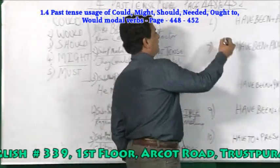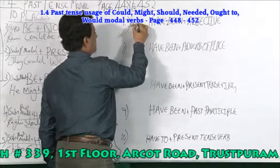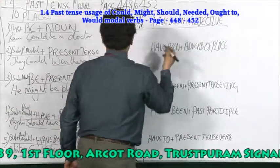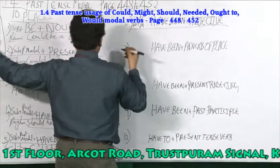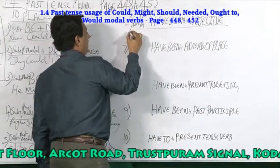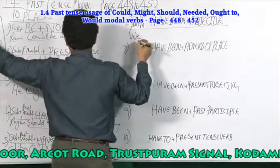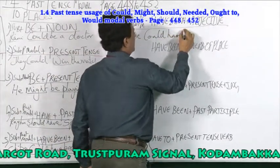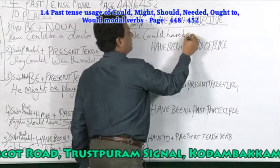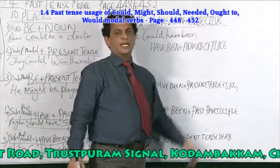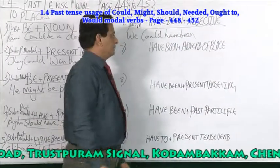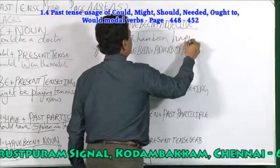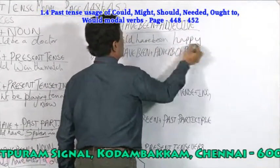Sixth place: subject plus past tense modal verb plus have been plus adjective. For example: we could have been happy. So you are using have been with an adjective.